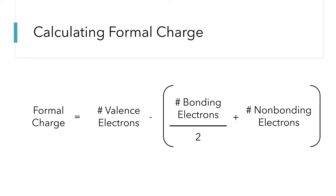Here's how we calculate formal charge. We figure out how many valence electrons an atom has and then compare that to the electrons assigned to it in our Lewis dot structure. We take half of the number of bonding electrons — half go to one atom in the bond and the other half to the other atom — and then all of the non-bonding or lone pair electrons are assigned to that atom. If the Lewis dot structure gives an atom exactly its number of valence electrons, the formal charge is zero. If it gives extra electrons, we get a negative formal charge, and if it gives fewer, a positive formal charge.